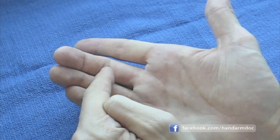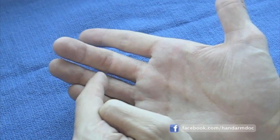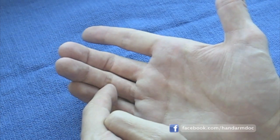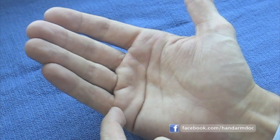The palm creases are named as follows, starting distally and working proximally toward the wrist: palmar digital crease, distal palmar crease, and proximal palmar crease.